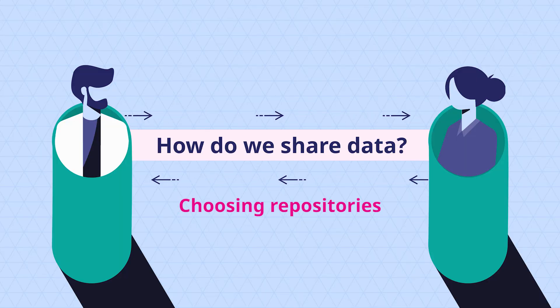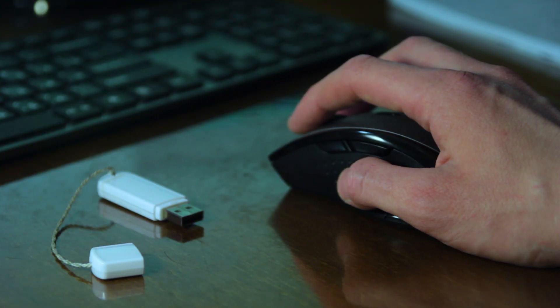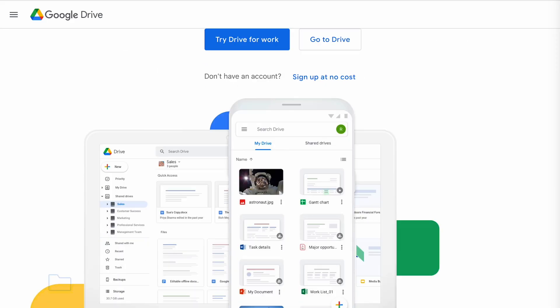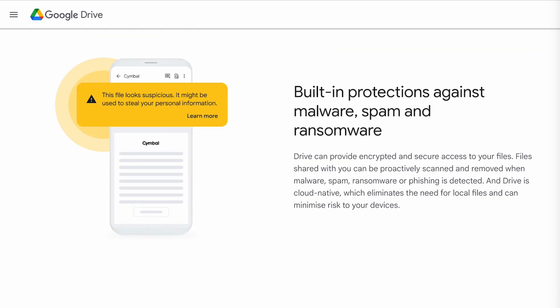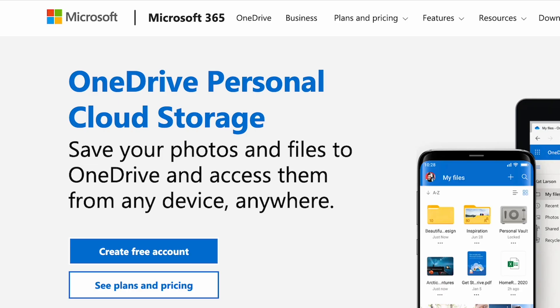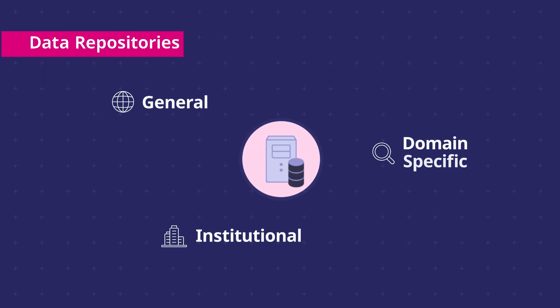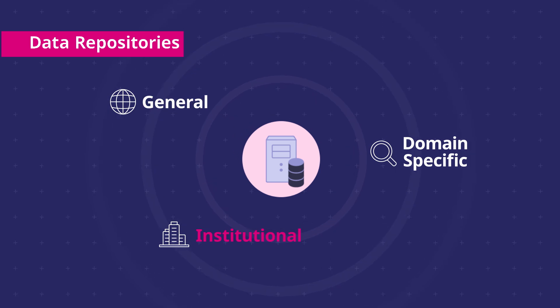Once you have prepared your data, documentation and metadata, it is time to share them with other researchers. This can be done via online data repositories. The purpose of these data repositories is to provide a long-term persistent storage solution so that users can be confident that any links and citations for your data will not break in the future. Storage solutions such as pen drives and network drives, or other devices such as personal web servers, Dropbox or journal servers, are insufficient for this purpose. There are a wide range of data repositories available which loosely fall into three broad and overlapping categories: general, institutional, and domain specific.